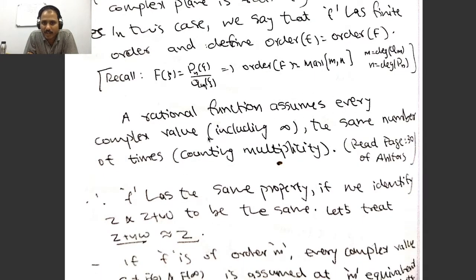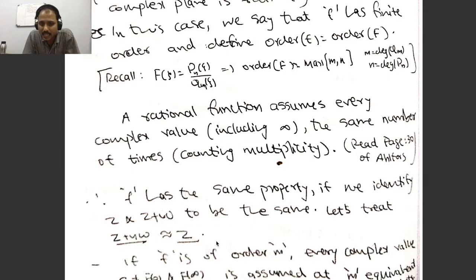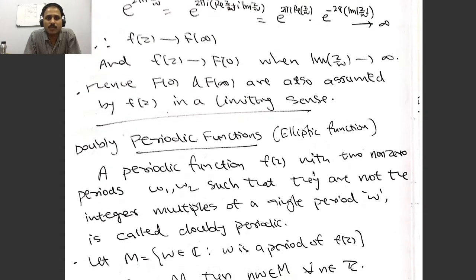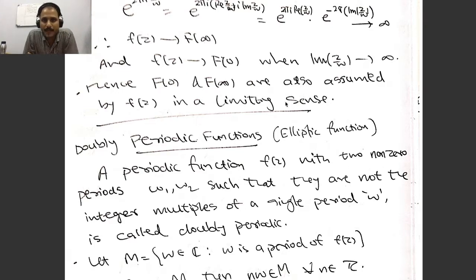A rational function assumes every complex value including infinity the same number of times counting multiplicity. From this identification, small f will have the same property, but we must identify z and z + ω as the same point, otherwise there would be infinitely many points. If we define the equivalence relation where z and z + nω are related, and f is of order m, then each value other than f(0) and f(∞) is assumed at exactly m inequivalent points. Those limiting values f(0) and f(∞) are also assumed in a limiting sense as Im(z/ω) tends to ±∞. This is the case of a simply periodic function.